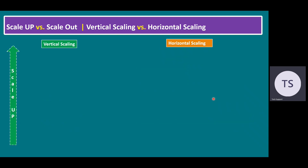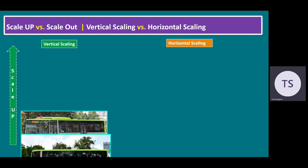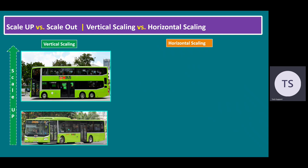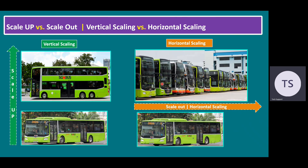For easy understanding, let me take a general example for the difference between vertical scaling and horizontal scaling. Let's say you take one normal bus. Vertical scaling means within a bus, if you add an additional deck — that means a double-decker bus — this is vertical scaling. Within our server, we are adding additional resources but not a new bus. When it comes to horizontal scaling, if you want to scale out, that means we are adding additional buses. This is the easy way to understand the difference between scale-up and scale-out, or vertical scaling versus horizontal scaling.